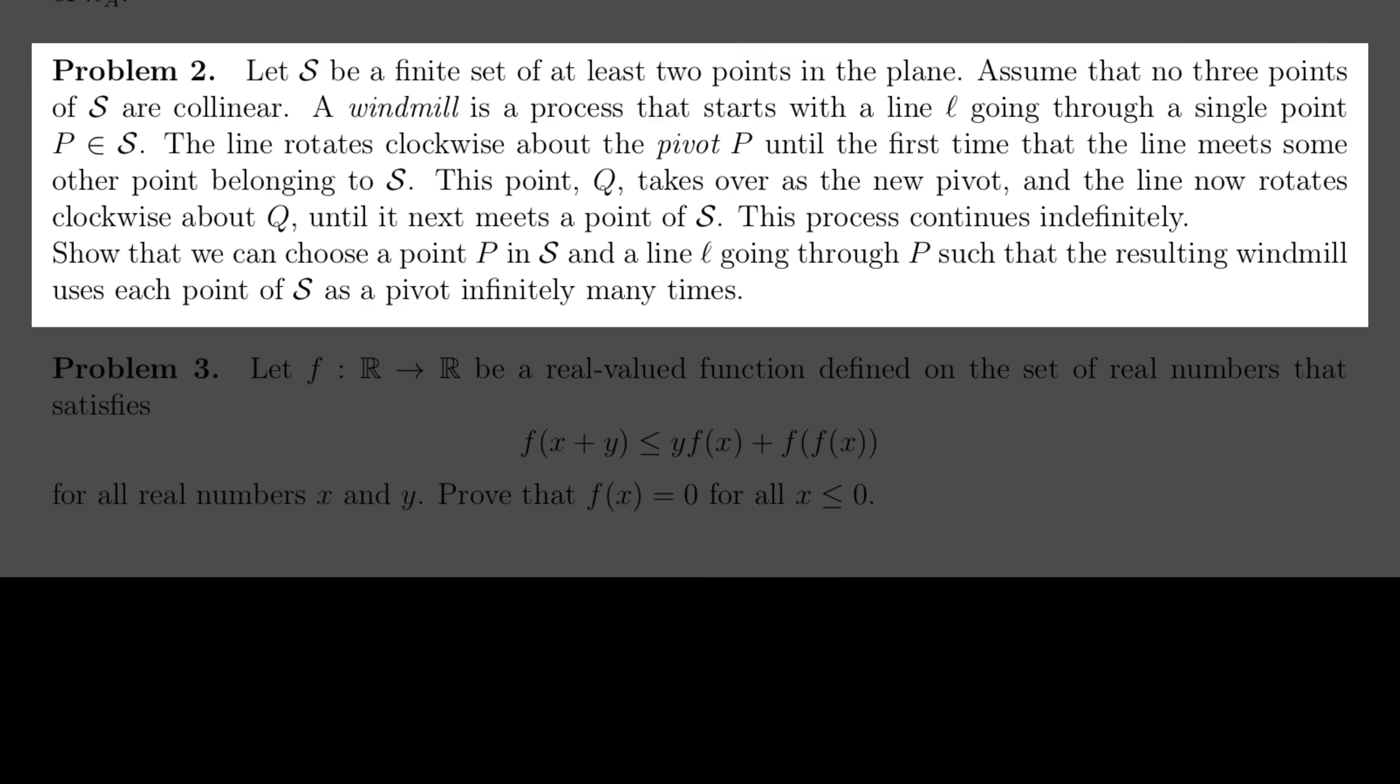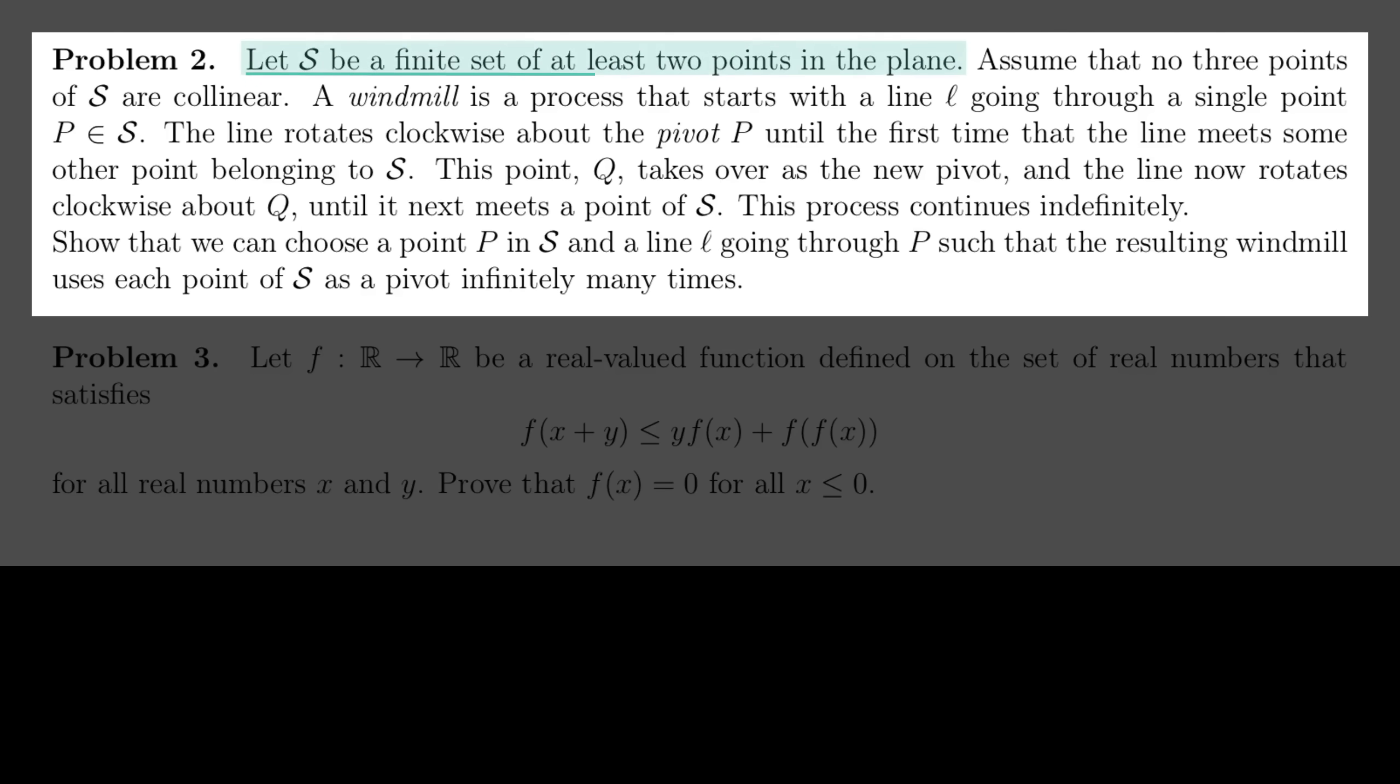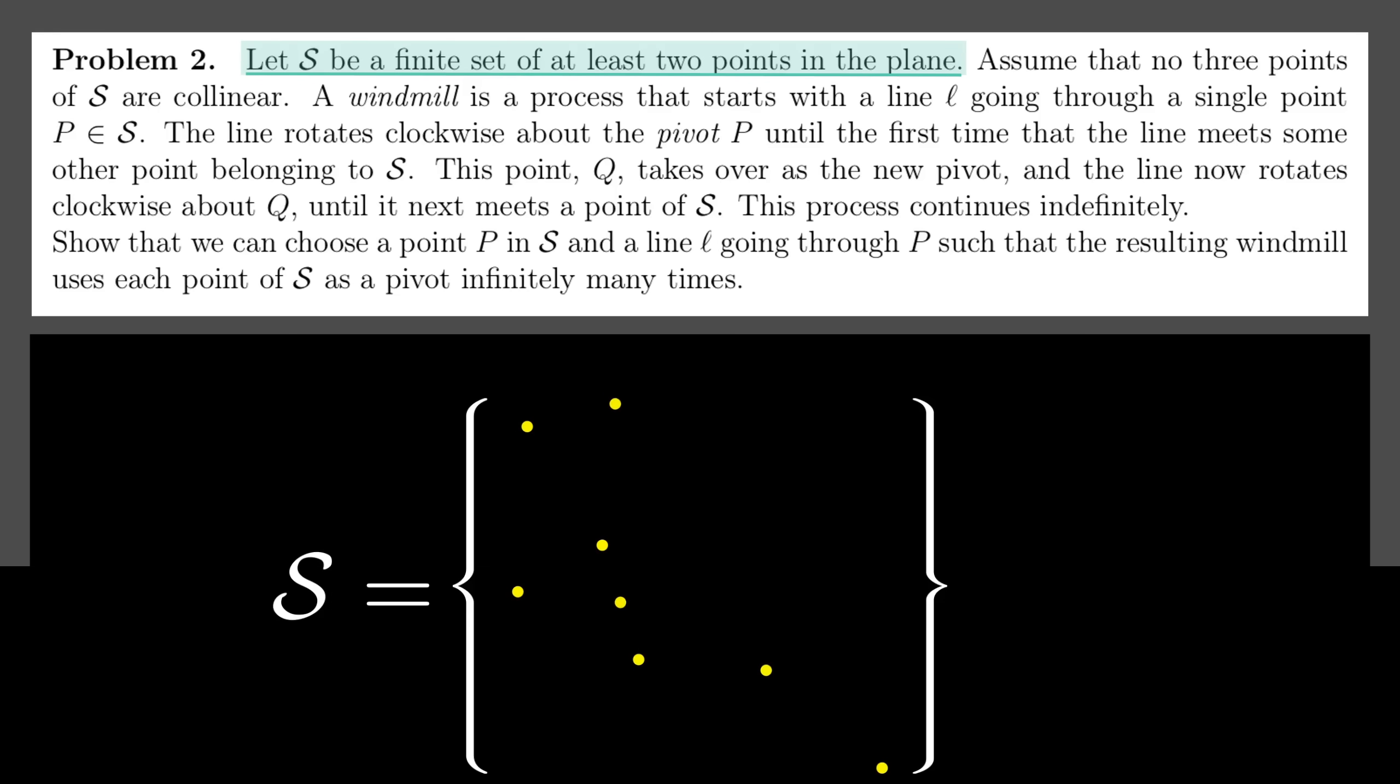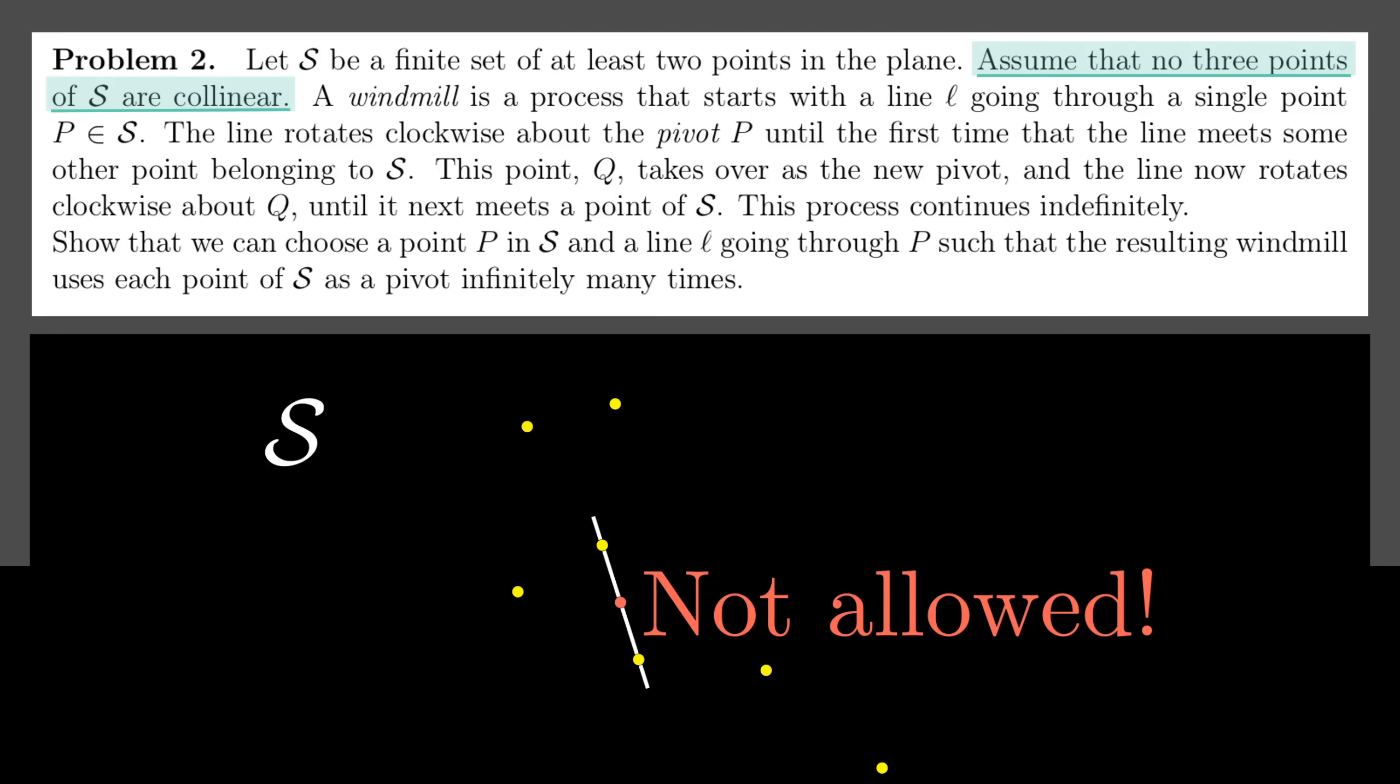So let's begin by reading through it carefully. Let S be a finite set of at least two points on the plane. Okay, so as you read the question, it's often helpful to start drawing an example for yourself. Assume that no three points of S are collinear. In other words, you never have three points lining up. So you can probably predict that the problem is going to involve drawing lines in some way that three points on one line would mess things up.